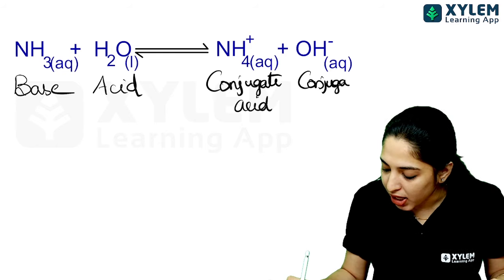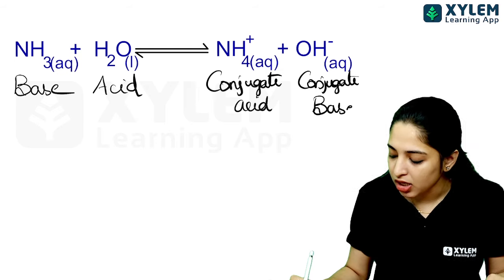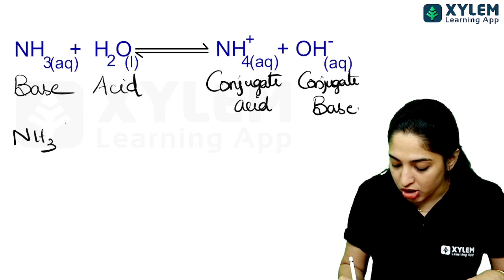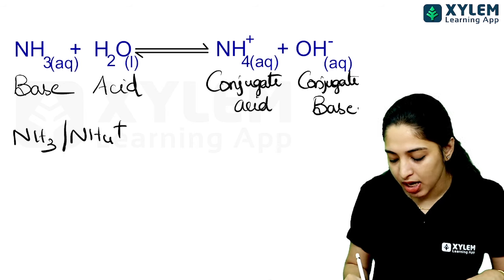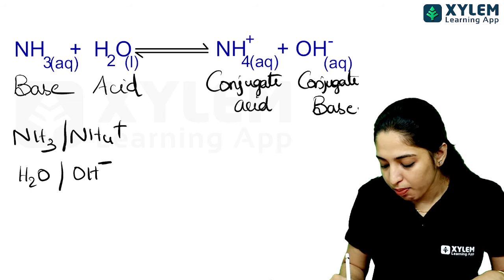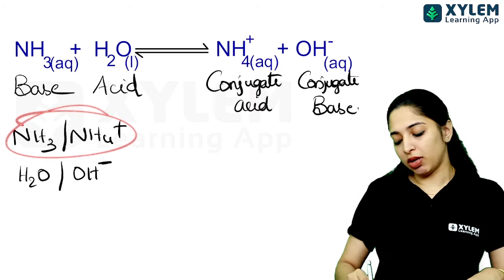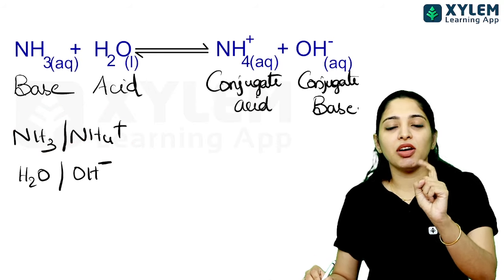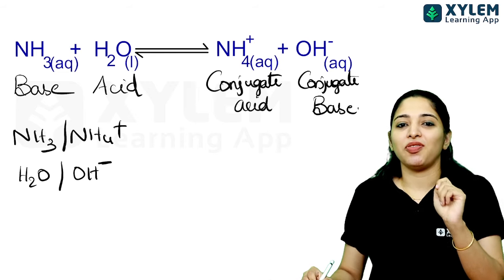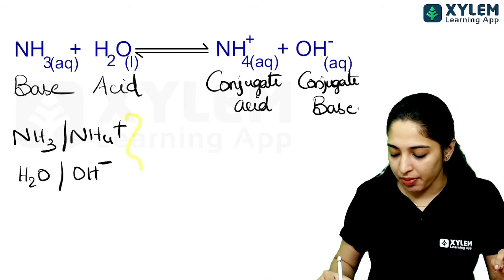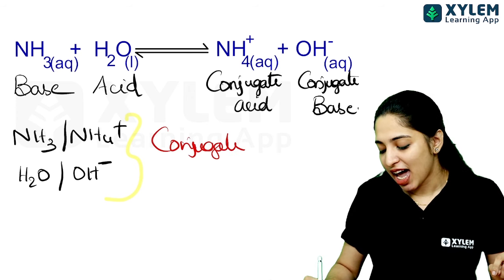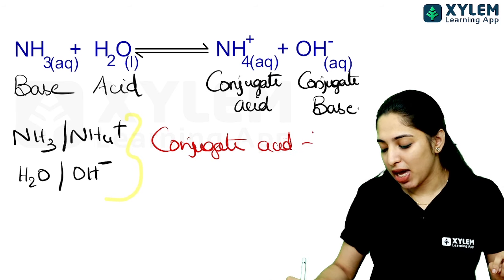So NH3's conjugate acid is NH4+, and H2O's conjugate base is OH minus. These two pairs differ by one proton — a one proton difference is what defines a conjugate acid-base pair.